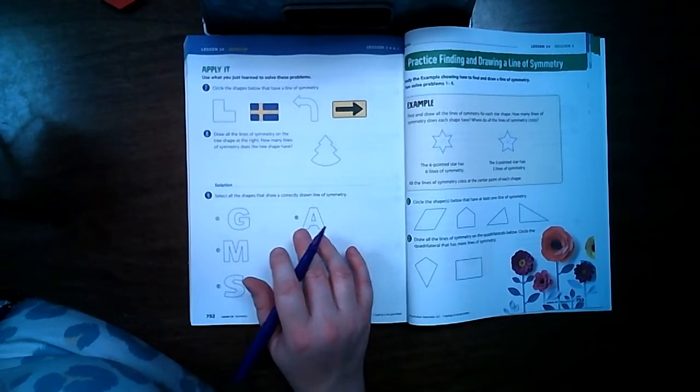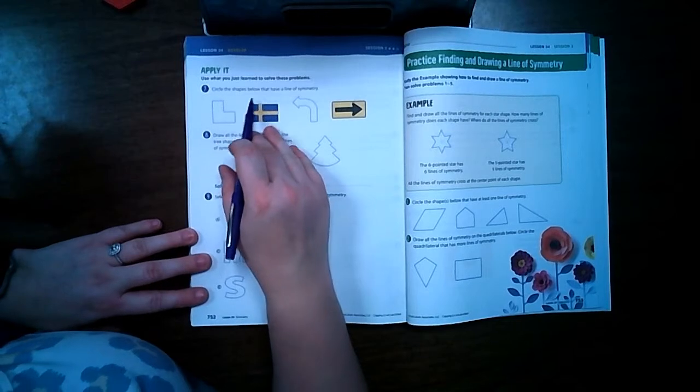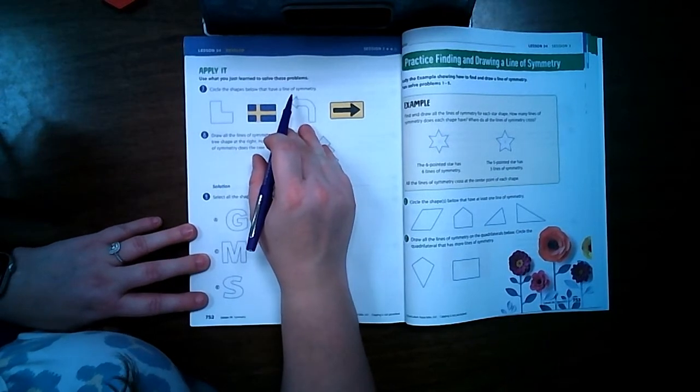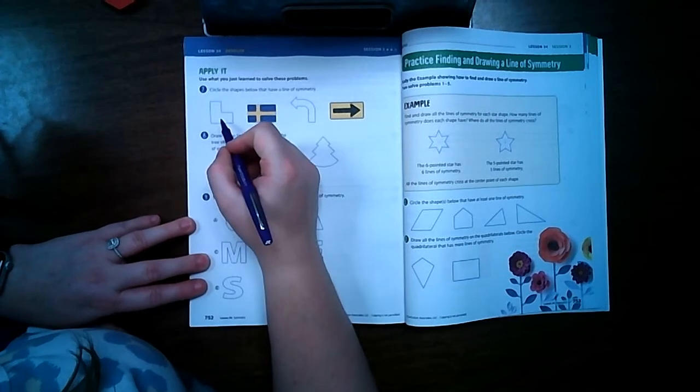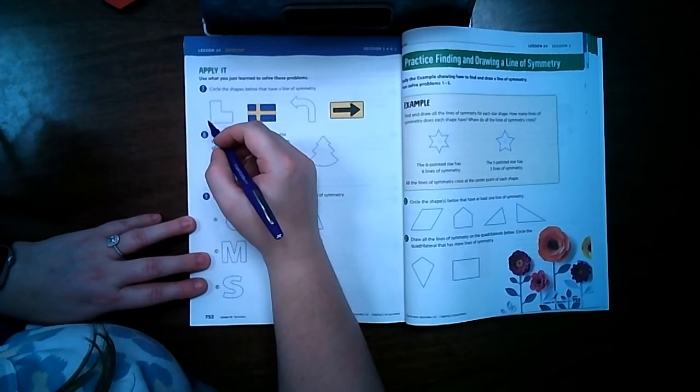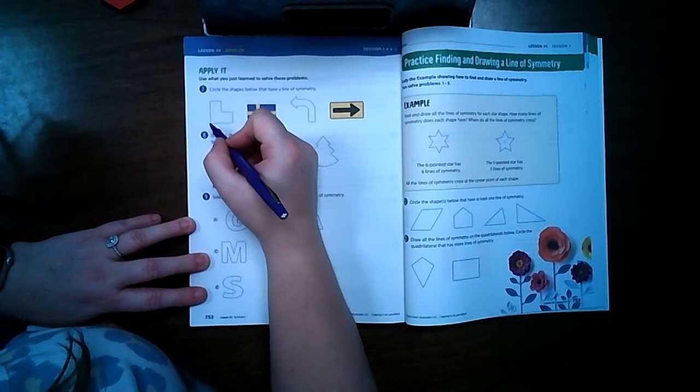We're on number seven: circle the shapes below that have a line of symmetry. So we have to be able to fold it in half. This one is a little bit tricky but if you trace it and cut it out you'll see that you can fold it.